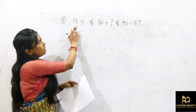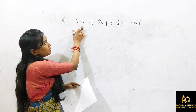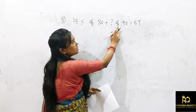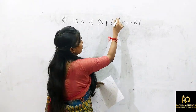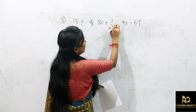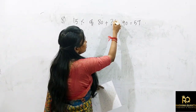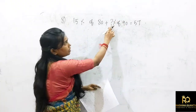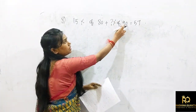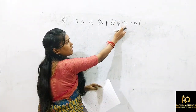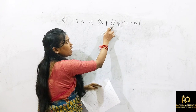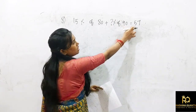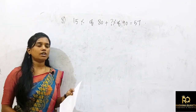For question 8: 15% of 80 plus question mark percentage of 90 equals 57. Calculate 15% of 80 — 10% is 8, 5% is 4, so 12. So 12 plus x% of 90 equals 57.